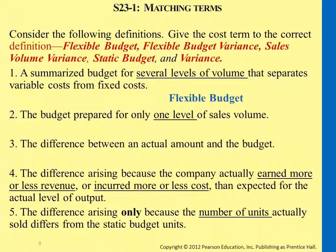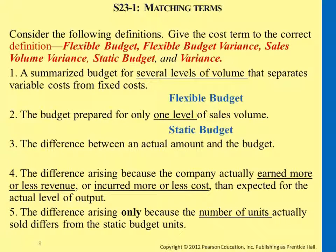The second: the budget prepared for only one level of sales volume. That's a static budget — what we did in the previous chapter. Just a set of sales budget, a set of operating expenses budget, inventory budget — together that's operating budgets.